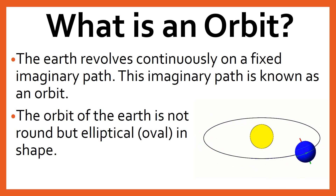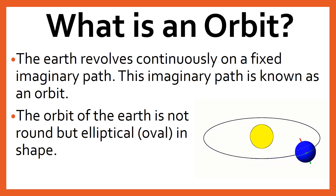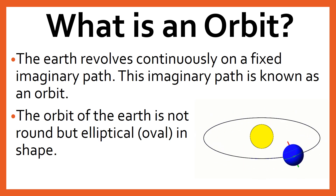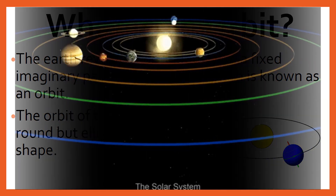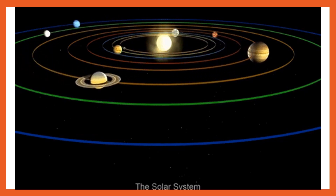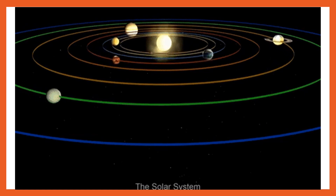Students, now we will discuss the second motion of the earth, which is revolution. But first, we will understand what is an orbit. The earth revolves on a fixed imaginary path, and this imaginary path is known as an orbit. So the earth rotates on its axis and revolves on its orbit. Don't get confused between rotation and revolution. The orbit of the earth is not round but elliptical — meaning oval — in shape. All planets also move around the sun in fixed orbits, and each planet has a different orbit.